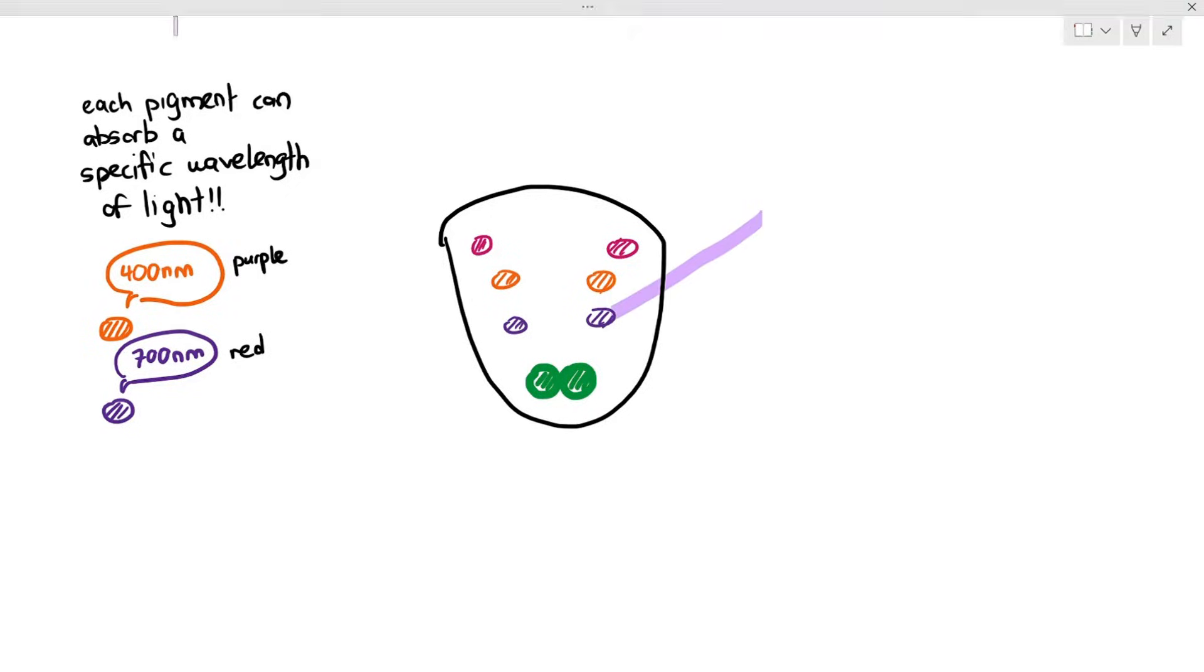For example, if I shine purple color light, which is 400 nanometer, to the purple pigment, look at what happens. The purple light gets reflected. This is not good, because if the plant wants to carry out photosynthesis, it needs to absorb as much light as possible. If it cannot absorb 400 nanometers, that's light that is not being absorbed, and that is light that is wasted.